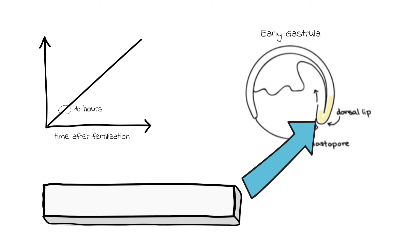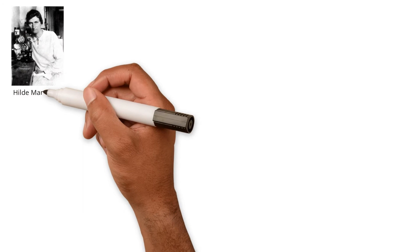Knowing that, we call this section of the gastrula the Spemann-Mangold Organizer, as it is the kickoff to the organization of your entire body.